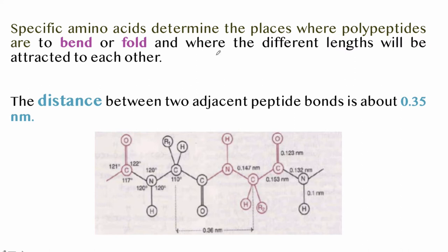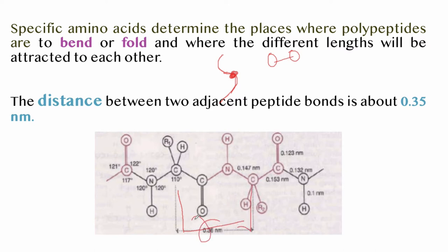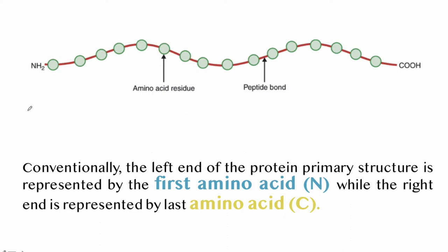Specific amino acids determine the places where the polypeptide is to bend or fold, and where different lengths will be attracted to each other. The distance between two adjacent peptide bonds is 0.35 nanometers. Conventionally, the left end of the primary protein structure is represented by the first amino acid (N-terminus) and the right end is represented by the last amino acid (C-terminus).